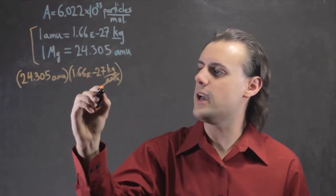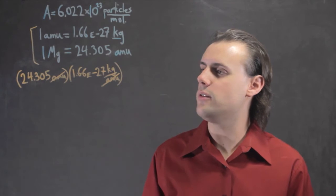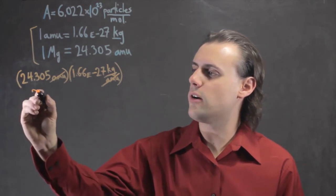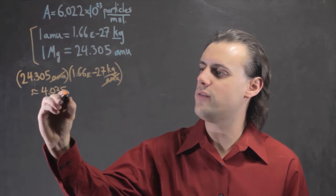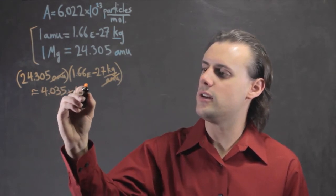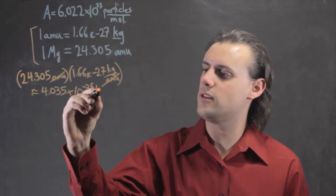So the AMU units cancel out, and we get approximately 4.035 times 10 to the negative 26 kilograms.